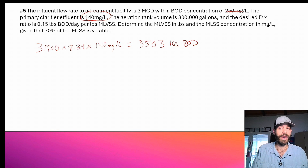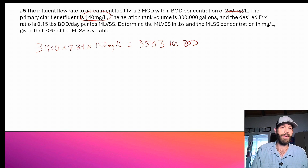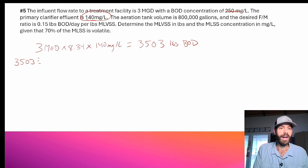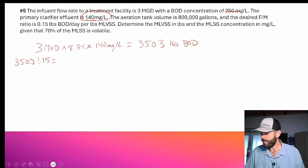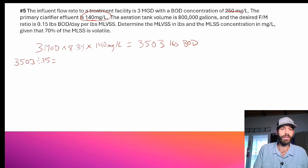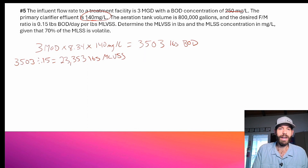There are two ways to get to the MLVSS pounds. The easy way is 3,503 divided by 0.15, which gives you 23,353 pounds of MLVSS. It's just the pounds formula divided by the ratio in decimal form.